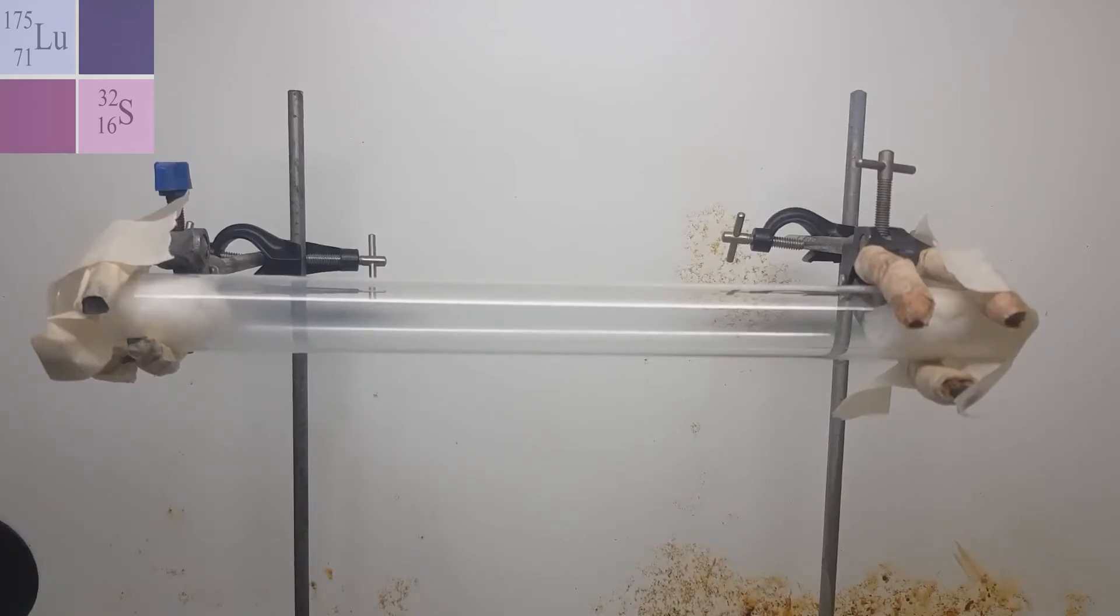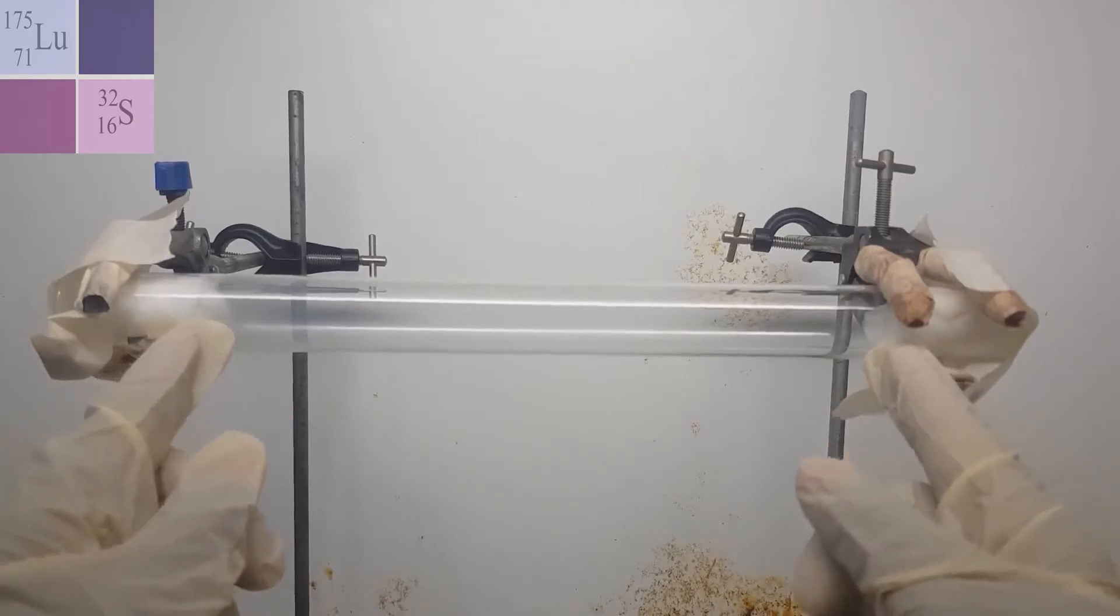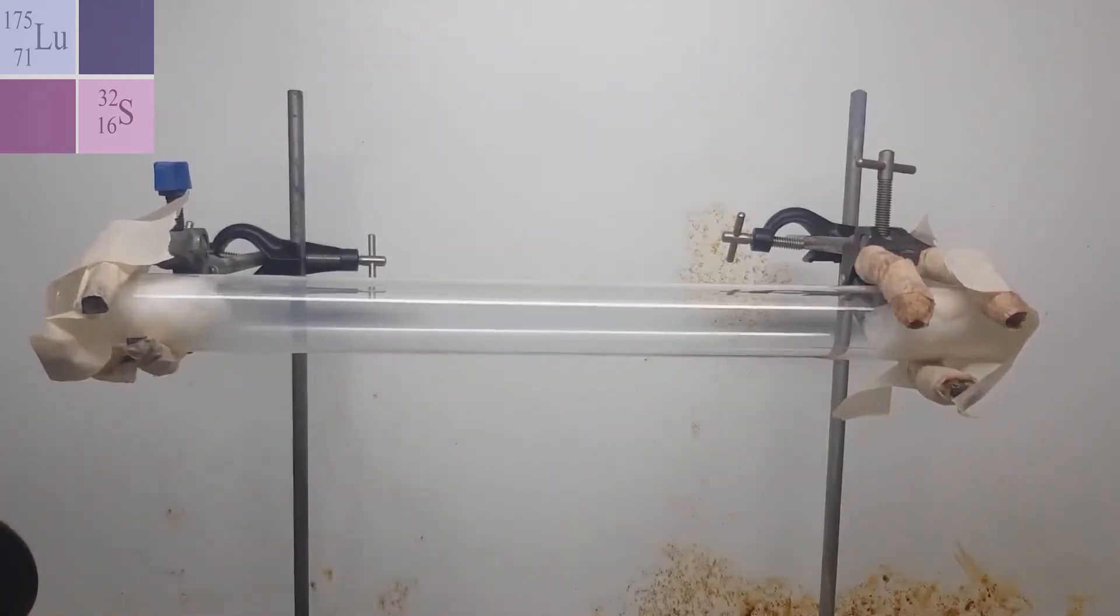Now we can actually measure the distance which these two gases travel using here and here as the starting point of each and this length as the length along which they travel. So we could actually measure the distance moved by each gas before they meet.